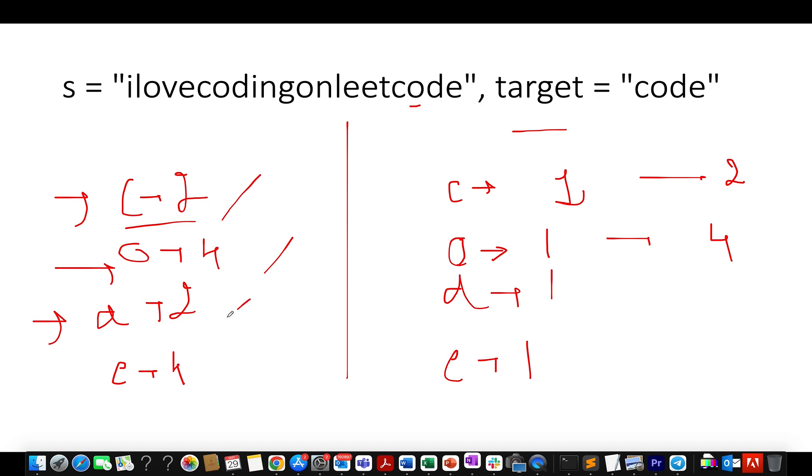With respect to D, two divided by one gives you two. Therefore, two instances of 'code' can be generated. Let's proceed ahead. Four divided by one gives you four.